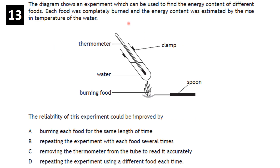Question on food energy content: each food was completely burned and energy estimated by temperature rise in water — how could reliability be improved? The answer is B: repeating the experiment with each food several times. Reliability is improved by repetition, not by introducing different foods.